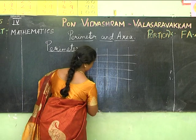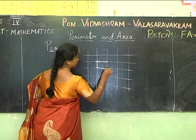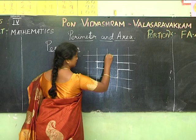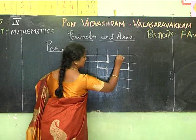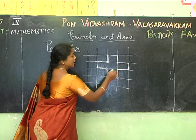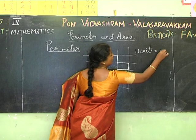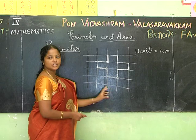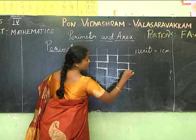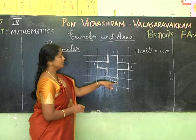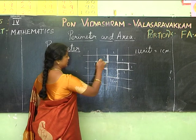Now if I have shapes drawn on a grid, where one unit equals one centimeter, the side of each square of the grid is 1 centimeter. To find the perimeter, I count the grid units along the boundary — for this figure that gives 12 centimeters.